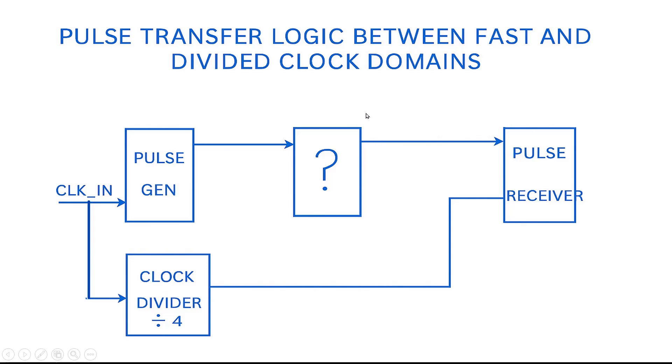Now you have to tell me what is the appropriate unknown logic which we have to put here, so that this pulse from the fast clock domain to the slow clock domain can be transferred safely. So another question to you is you have to tell me the clock input and the output of this clock divider.